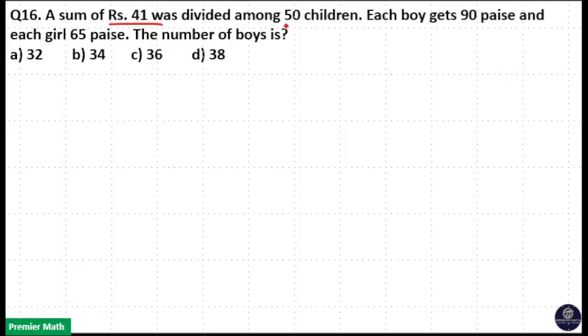A sum of rupees 41 was divided among 50 children. Each boy gets 90 paise and each girl gets 65 paise. The number of boys is? We have total number of children equal to 50 and total sum equal to 41 rupees.